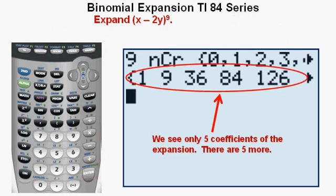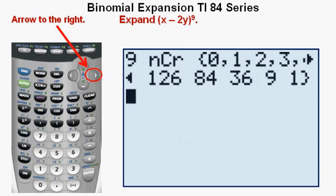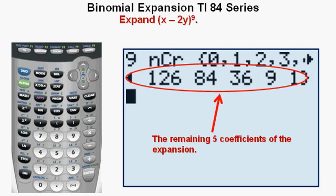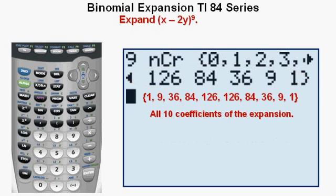In this view, we see only 5 of the 10 coefficients of the expansion. There are 5 more of them, and we get these 5 others by arrowing to the right. Here we see the remaining 5 coefficients on the right. Here in red below are all 10 coefficients of the binomial expansion in set notation.